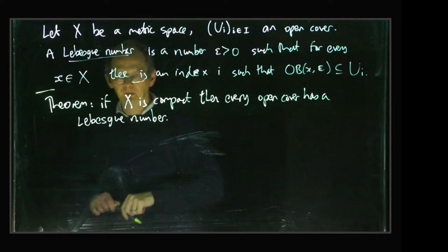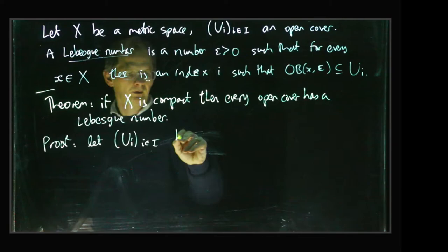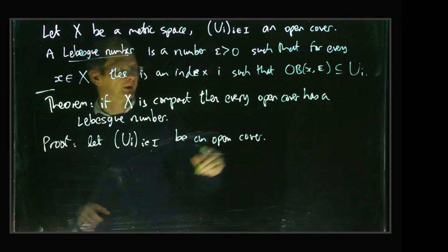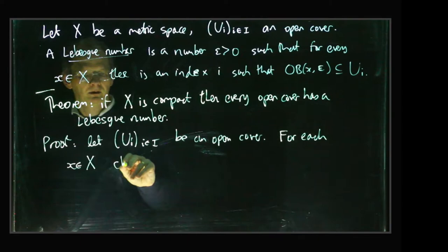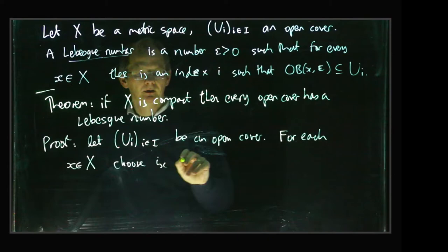So we have an open cover like this and then we need to construct a Lebesgue number for it. So for each point x in X, we're going to choose some index, say i_x, with x lying in that set.